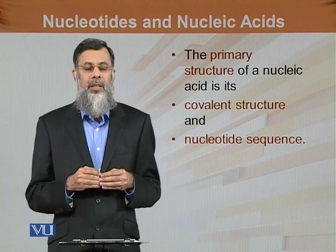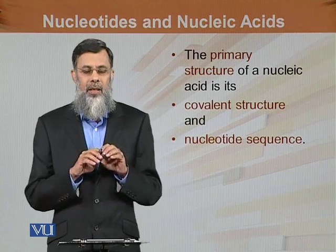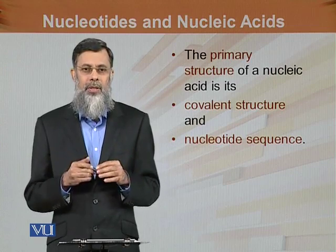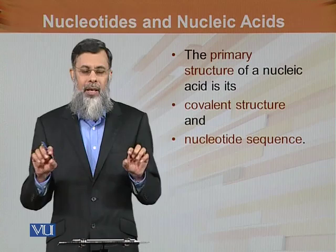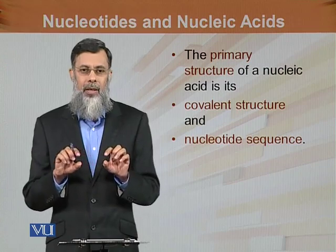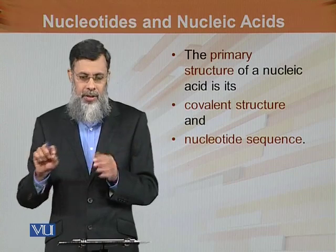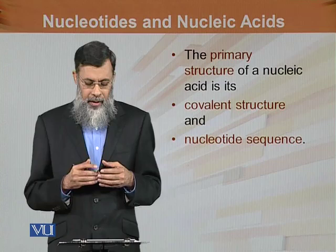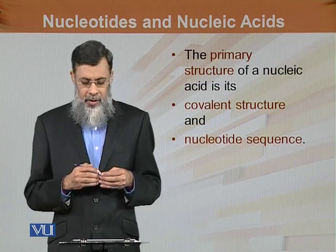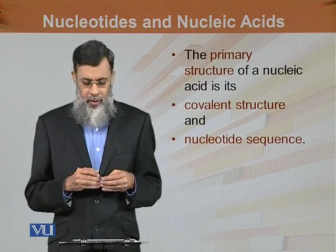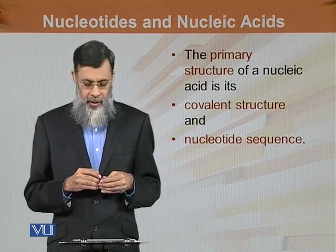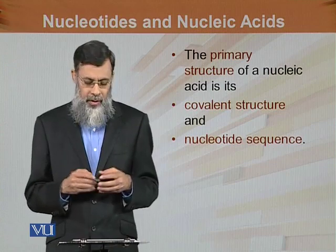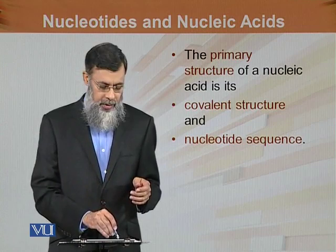The primary structure of nucleic acid refers to the arrangement of dNTPs — deoxyribonucleotide phosphates — joined in a straight chain, just as amino acids are arranged in a straight chain in a protein. The primary structure of nucleic acid is its covalent structure, and the nucleotide sequence formed by these covalent bonds is known as the primary structure.